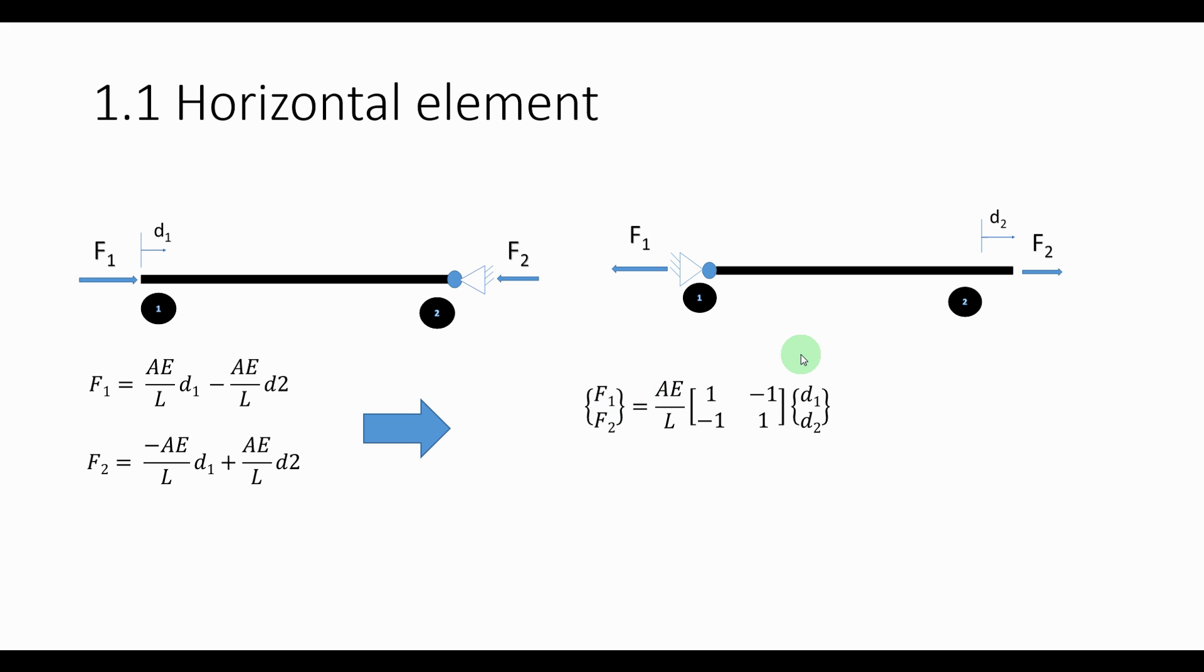You can see I've just rewritten this in matrix form so F1, F2 again, AE over L I've taken out of the matrix which gives the 1, minus 1, minus 1, 1 as you can see there and again just the displacement 1 and the displacement 2.